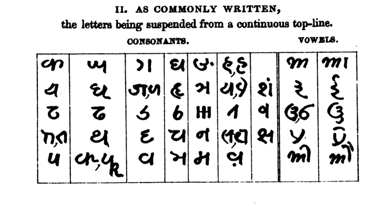Kaithi script derives its name from the word Kayastha, a social group of India that traditionally consists of administrators and accountants. The Kayastha community was closely associated with the princely courts and colonial governments of North India.